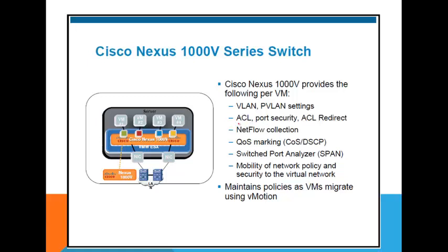With 1000V, we now get additional features that were not available before: we can write ACLs for VMs, port security, access control redirect, NetFlow collection for both receive and transmit, quality of service including Layer 2 QoS, Layer 3 QoS, DSCP as well as CoS. And SPAN — analyzing data flow over a particular VM port. This is really wonderful.